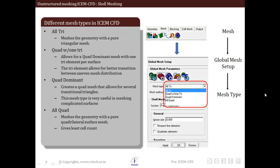So let us see what are the different mesh types available. You can see various mesh types under the mesh tab at the top of ICEM CFD user interface. If you click on global mesh setup and shell mesh, you can see mesh types as all tri, quad with one tri, quad dominant, and all quad. These are the four different types of shell mesh elements available in ICEM CFD.